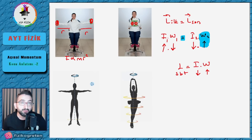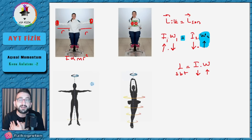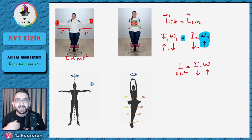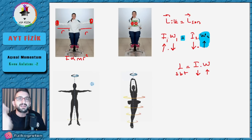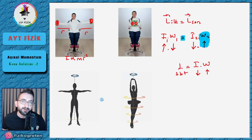Benzer bir olayı buz pateni yapan sporcularda görüyoruz — intro videosunda da bunu paylaşmıştım. Buz pateni yapan kişi hızlı dönmek istediği zaman kendini kapatıyor ve çivi gibi çok hızlı dönüyor. Gösterisini bitirmek istediği zaman kollarını açıyor ve hareketi yavaşlayarak bitiyor. Dönen sandalye deneyi ile buz pateni yapan kişinin olayı tamamen aynı.